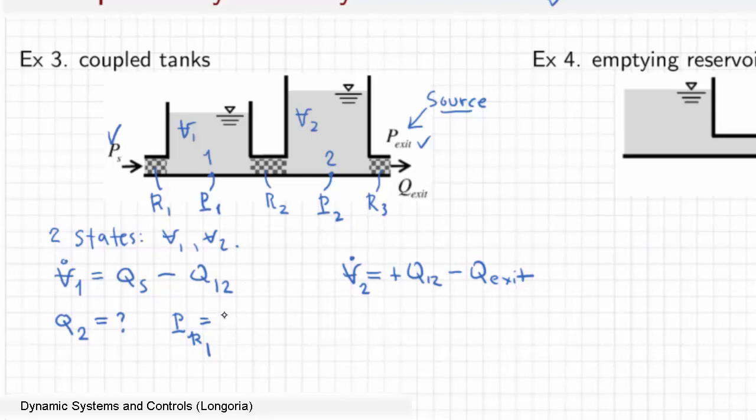Oops, let's call that P_R1, because I call that P1. That is R1 times Q_R1. And Q_R1 is that flow, also coming through here, so that's equal to Q_S. I should have probably called that Q_R1 instead of Q_S.